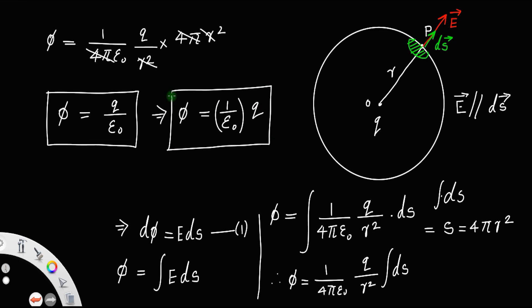What Gauss's theorem states is the electric flux through a hypothetical or spherical or any Gaussian surface will be 1 by ε₀ times the charge enclosed by that surface. Here in this case, it is a sphere. So the electric flux through this spherical surface is 1 by ε₀ times the charge enclosed by that sphere.